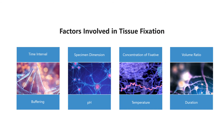Factors involved in tissue fixation. Time interval: the time interval from removal of the tissue to fixation is also important — the faster you can get the tissue fixed, the better. Specimen dimension: penetration of tissues depends on the diffusibility of each individual fixative, which is usually slow. One way to address this problem is to section the tissues thinly, at 2–3 mm.